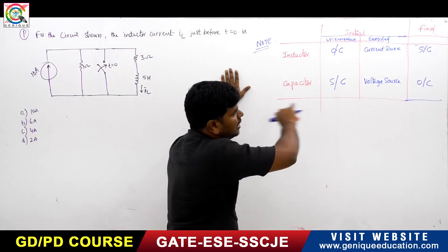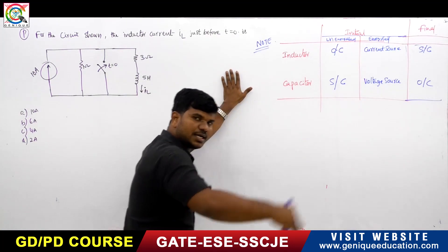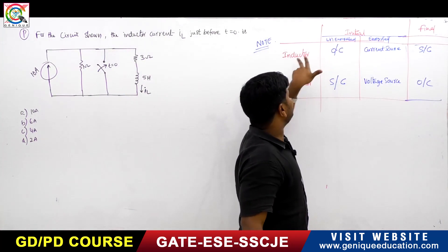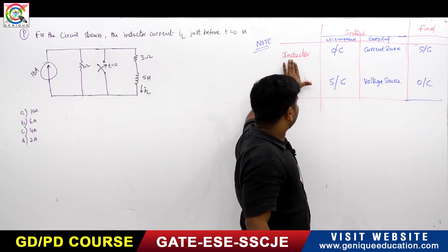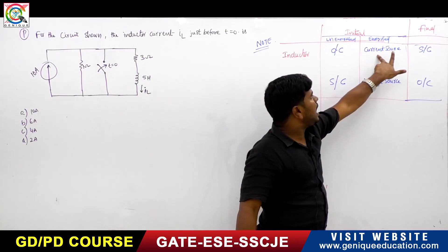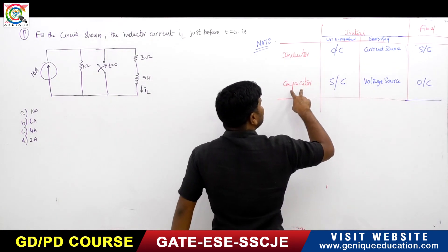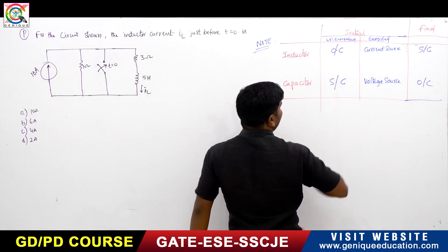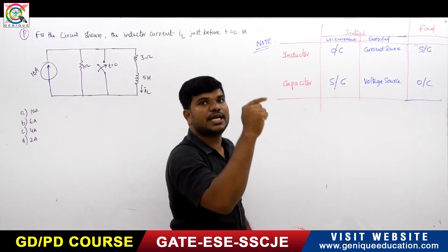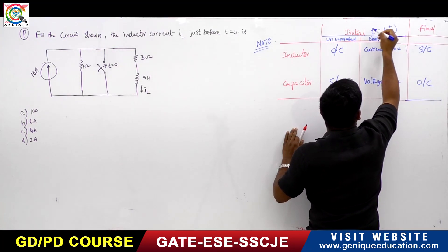If you know this clearly, transient problems are very easy for you to solve. The unenergized capacitor in initial condition acts as short circuited. The energized inductor in initial condition acts as current source. Initial condition means at T equals T-naught plus, or 0 plus. Final condition means at T equals infinity.